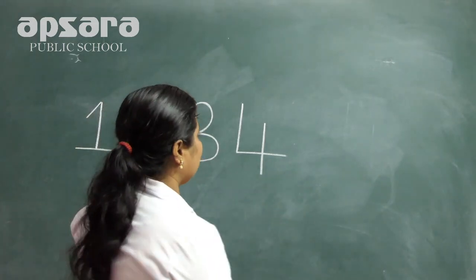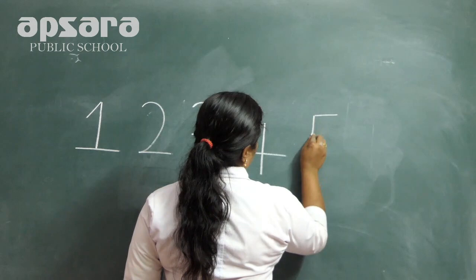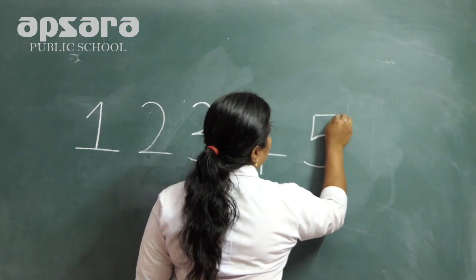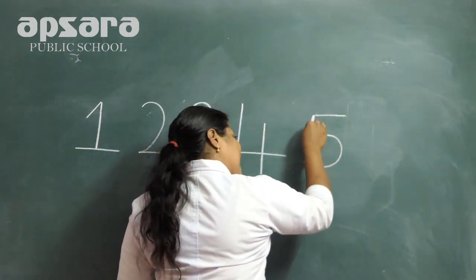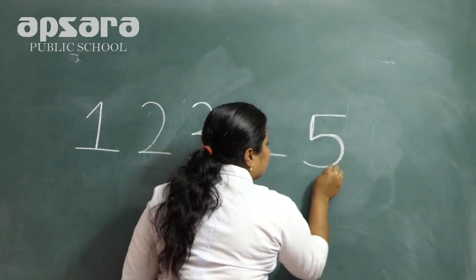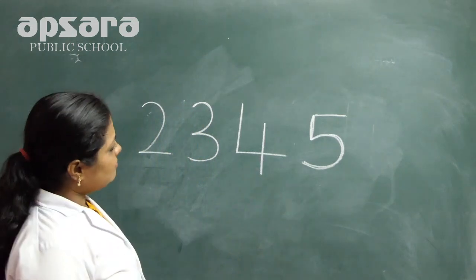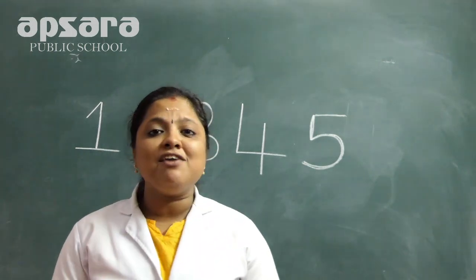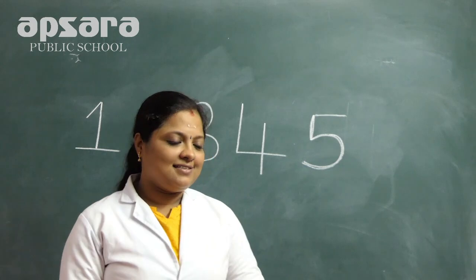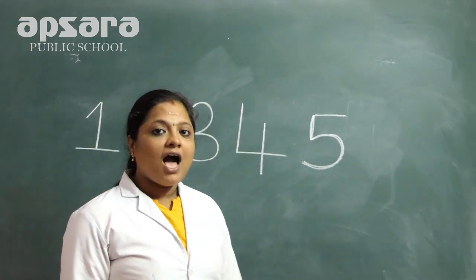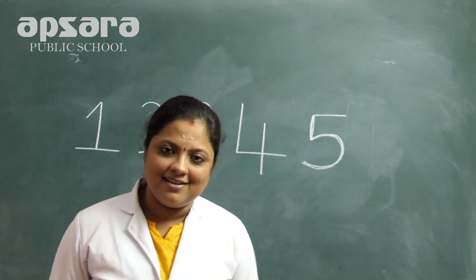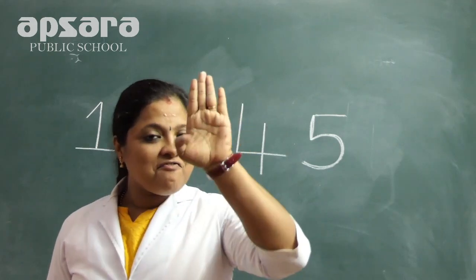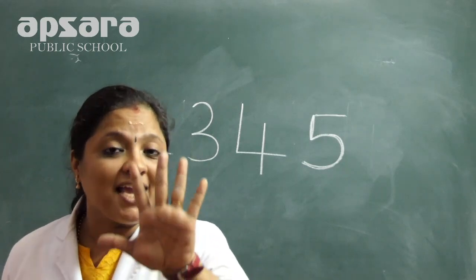And what is the next number? Five. How to write? One sleeping line, standing line, a curve — it makes number five. How many fingers do you have in one hand? One, two, three, four, five. Five fingers in one hand.